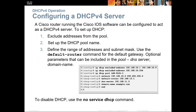A Cisco router running IOS can be configured to act as a DHCP server. First, set up excluded addresses — addresses we do not want to hand out. Then set up a pool name, for example 'LAN-pool-1'. Then define the range of addresses using the network address and subnet mask. Make sure to include the excluded addresses to set reservations. Here we are excluding addresses 1 through 9 and 254 from being handed out.